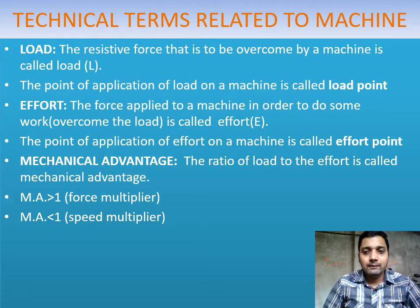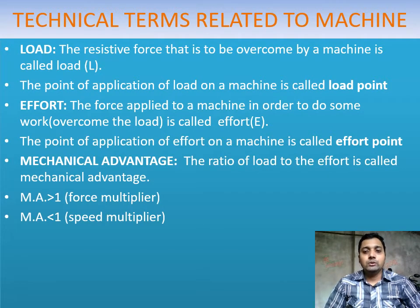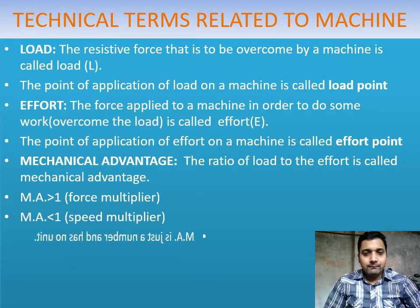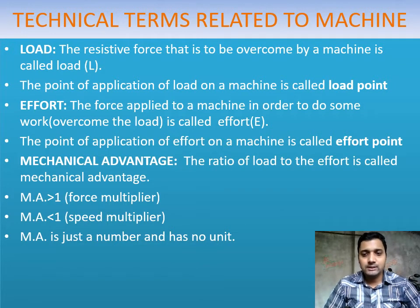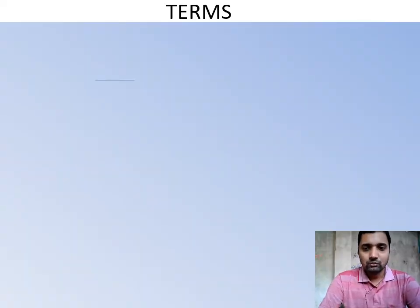MA is just a number because it is a ratio between load and effort, so it has no unit. Now another important term: velocity ratio, or VR.